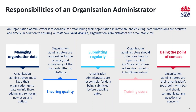Your organization must take reasonable steps to ensure the data is protected by taking such security safeguards as are reasonable in the circumstances against loss, unauthorized access, use, modification or disclosure, and against all other misuse. DCJ recommends that each organization has at least two organization administrators to ensure someone is always on hand to lead the various functions in case of leave or turnover.